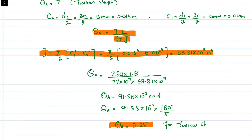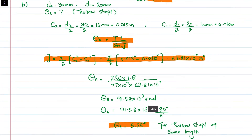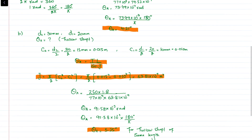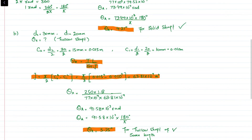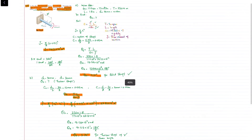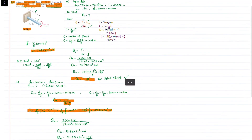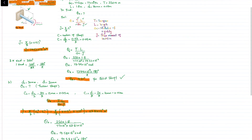So theta_A = 5.25° is the answer for part B — the hollow shaft — while theta_A = 4.21° is the answer for part A — the solid shaft. These are the final answers for both parts. I hope you enjoyed this video; thank you for watching.